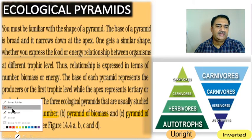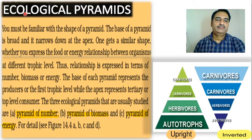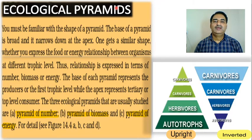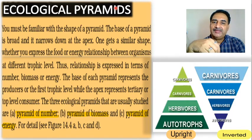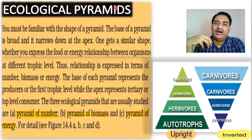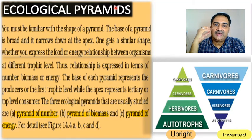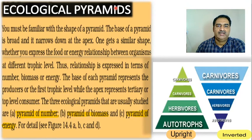Ecological Pyramid is a very simple concept. It is a representation. Charles Elton (Irriton) gave this concept, so we also call it the Eltonian Pyramid. It is pyramid-shaped. Let's first see what your NCERT text says about it.